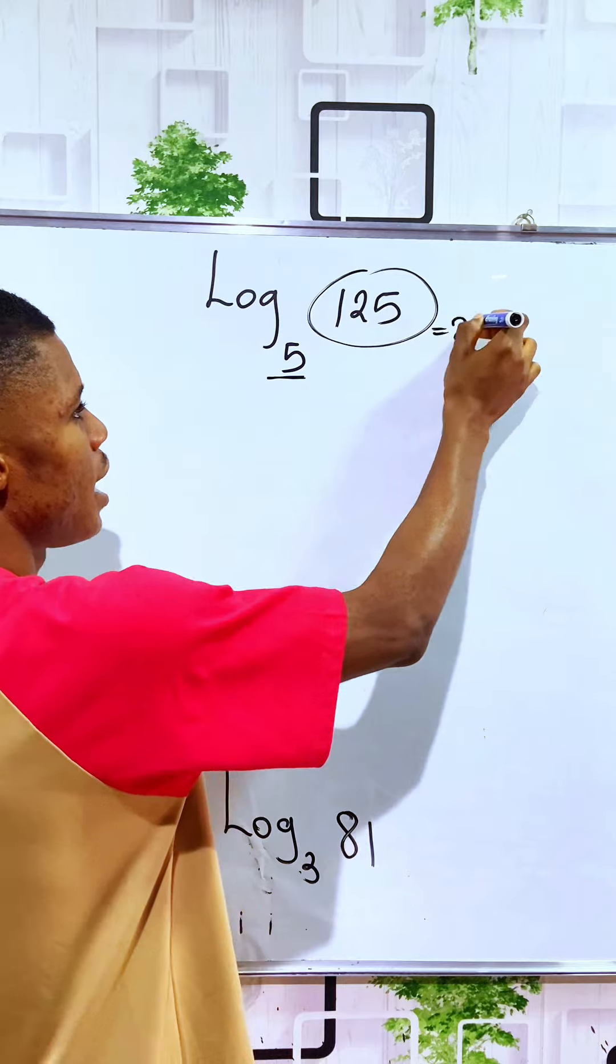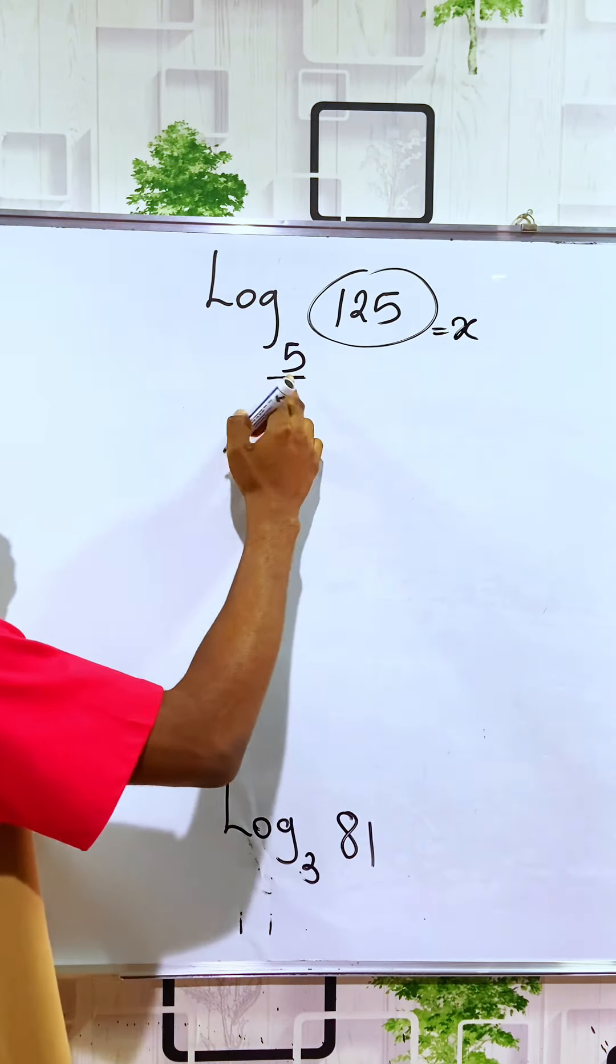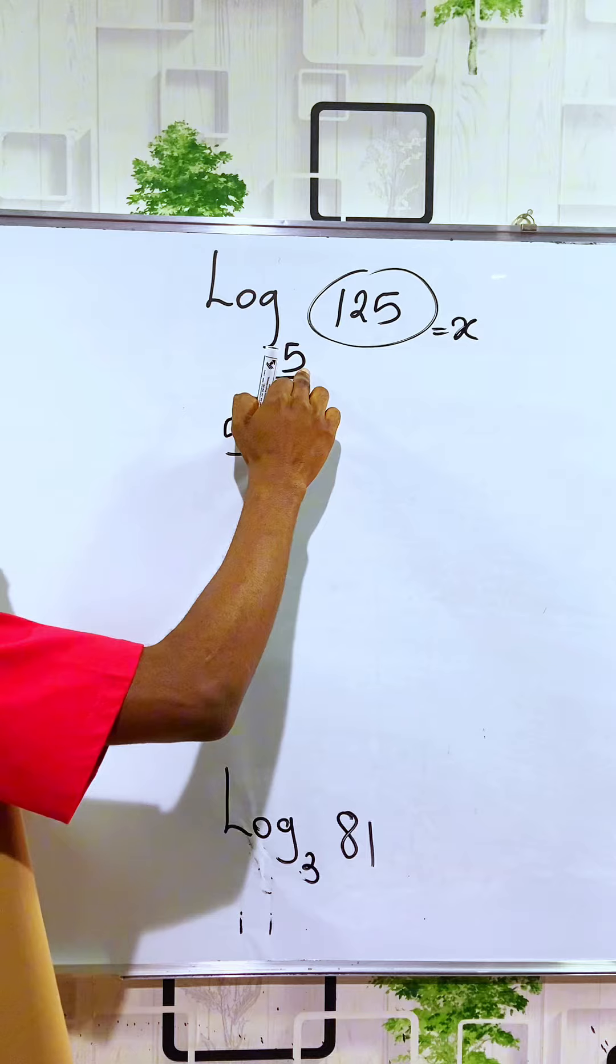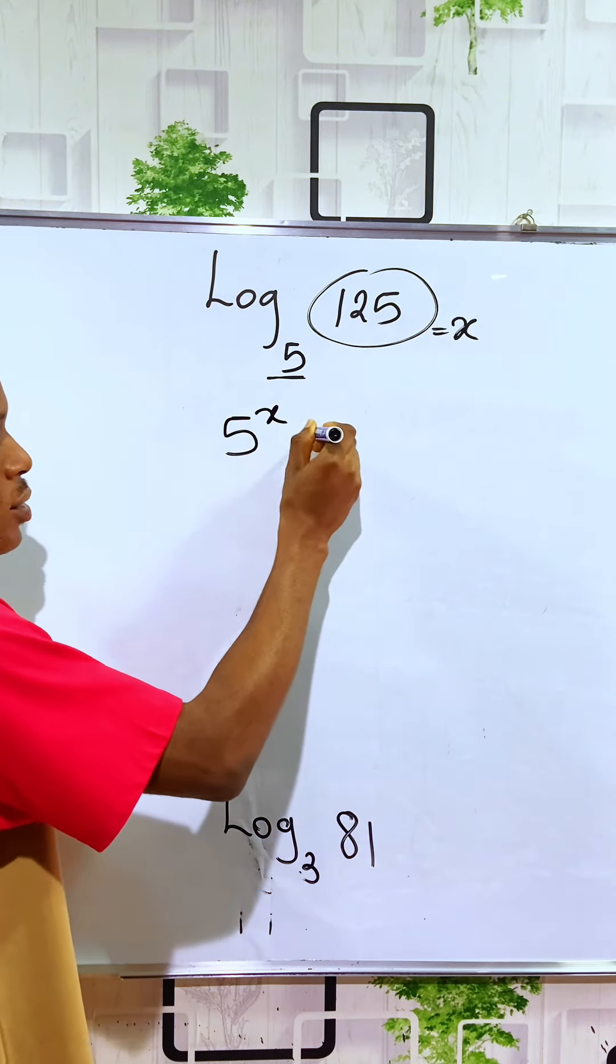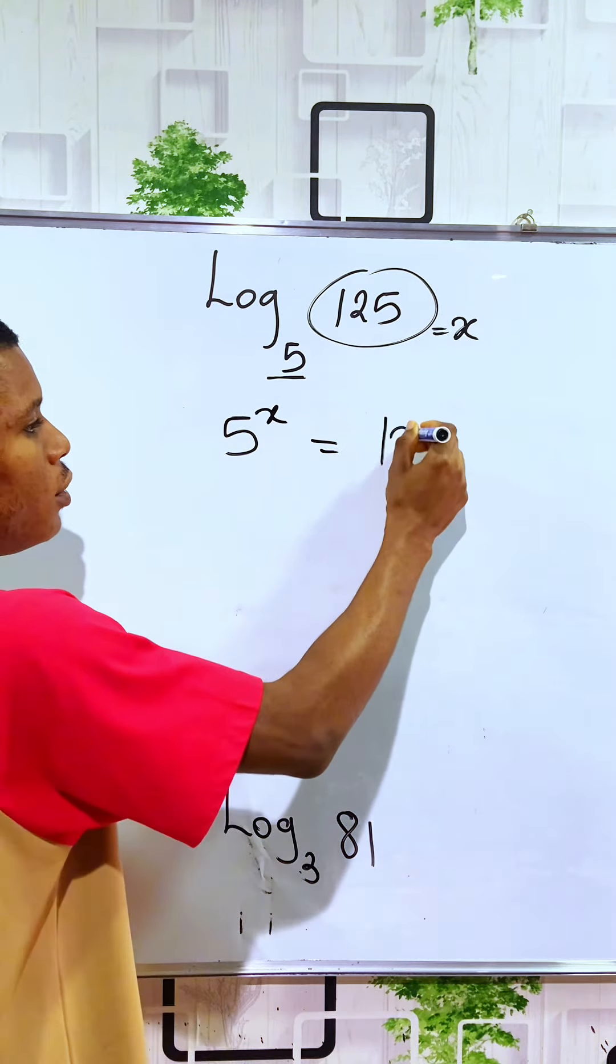Let's say this to be X. Since we are told we are going to raise this logarithm to base 5 to X times to get the number 125.